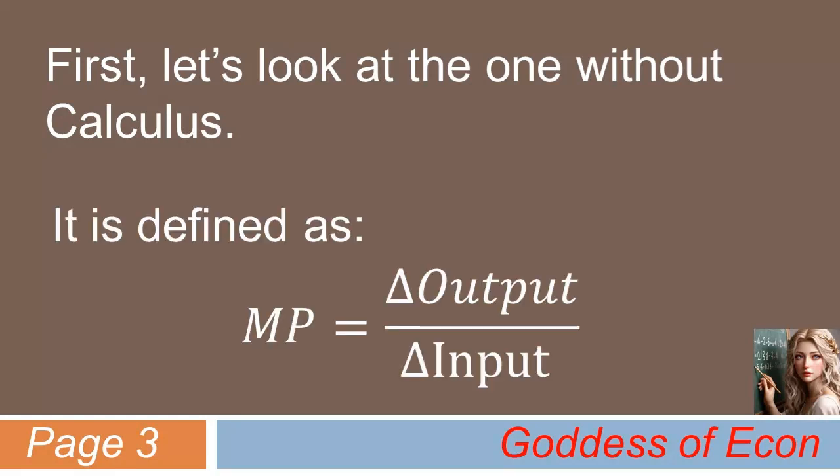Mathematically, it is defined as the change in output over the change in input. Here, the numerator is the change in output due to the change in input. In other words, it basically shows by how much the output would increase if the input of production increased by one unit.